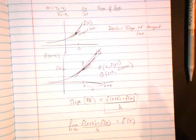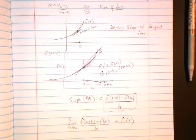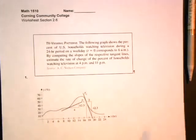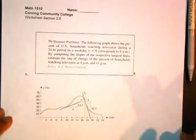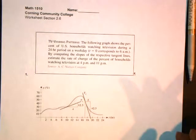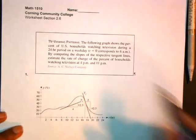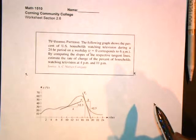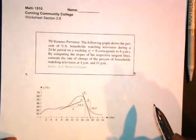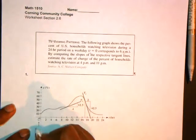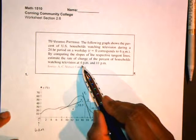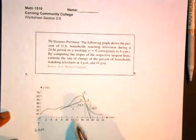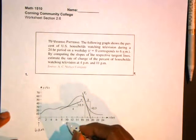Alright, now the homework starts off with some warm-up type questions. So the next worksheet you'll see should look something like this. Okay, there's a little graph, the 2.6. It's called TV Viewing Patterns. It says the following graph shows the percent of U.S. households watching television during a 24-hour period on a weekday. t equals 0 is 6 a.m. But computing the slopes of the respective tangent lines estimate the rate of change of the percent of households watching TV at 4 p.m. and 6 p.m. So this is 0, which is 6 a.m. So 4 p.m. would be how many hours later? Well, let's see. 6 a.m. to 6 plus 6 is 12. Okay, that would be 6 p.m. So go back. So this would be it. This would be 4 p.m.